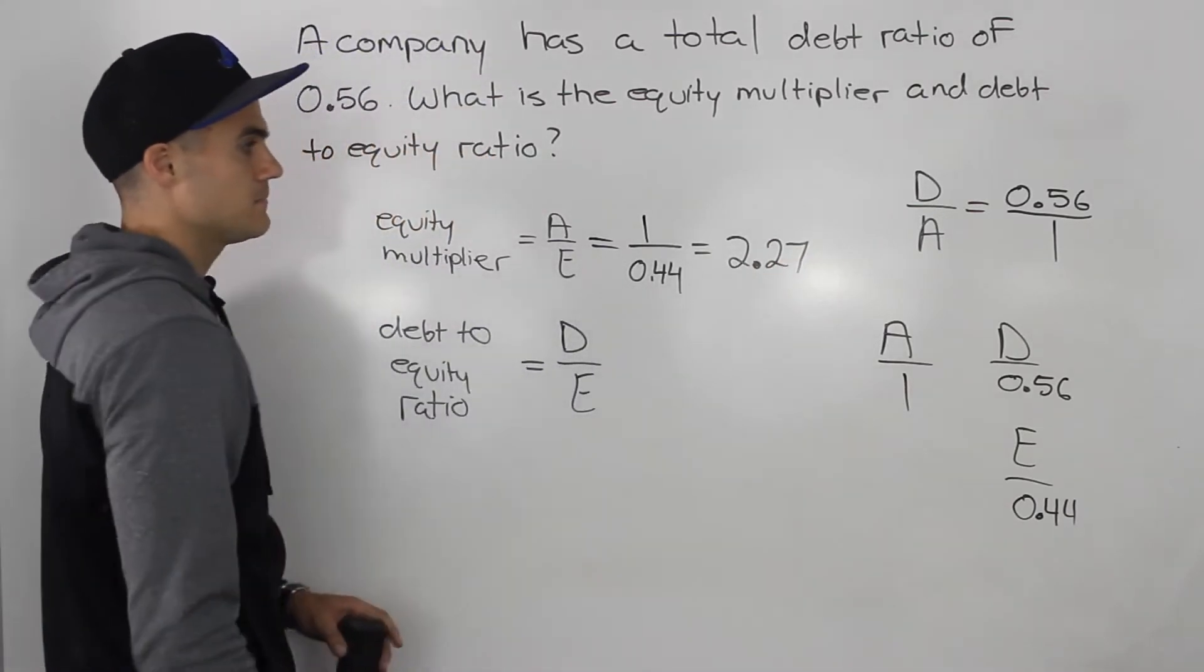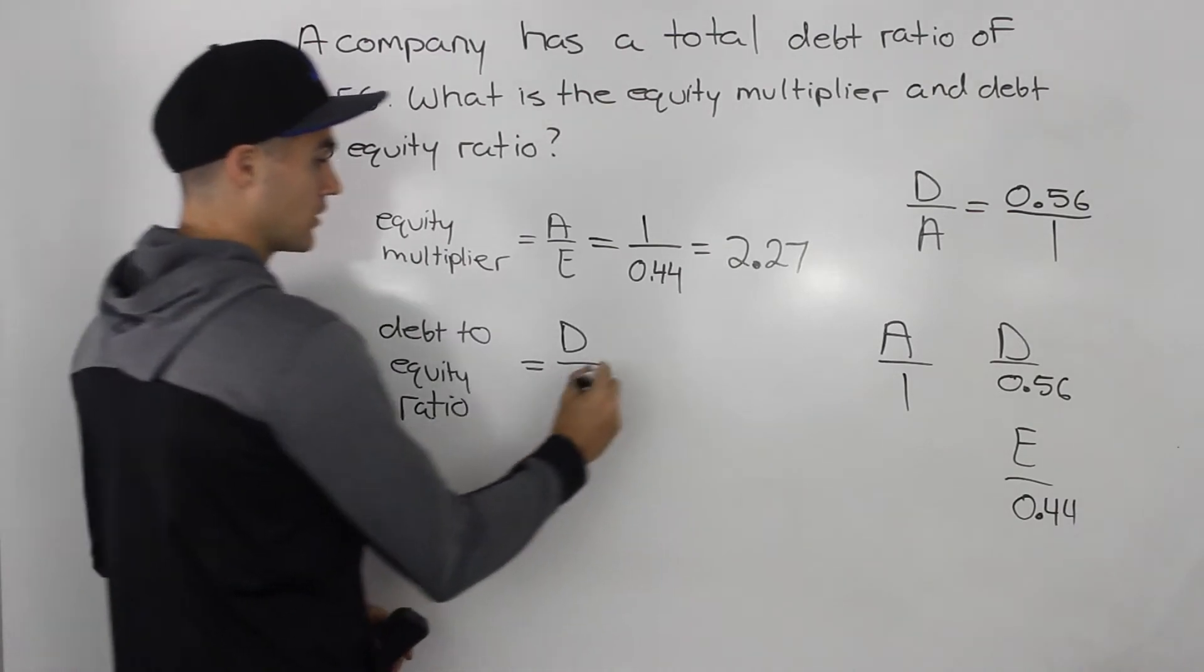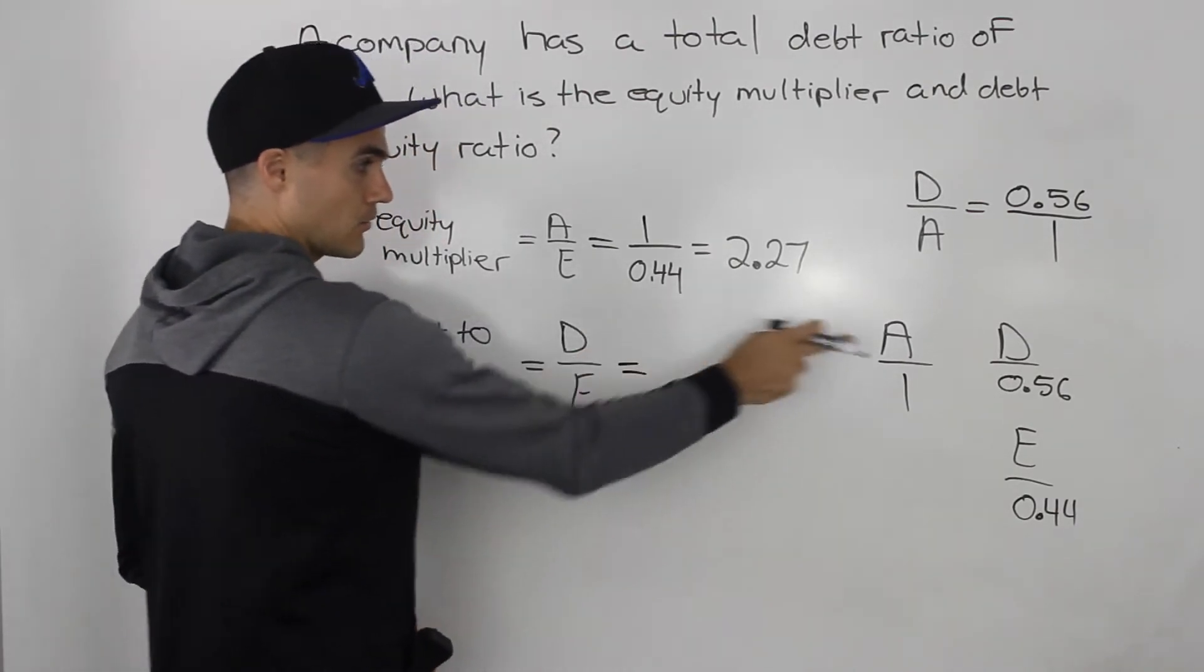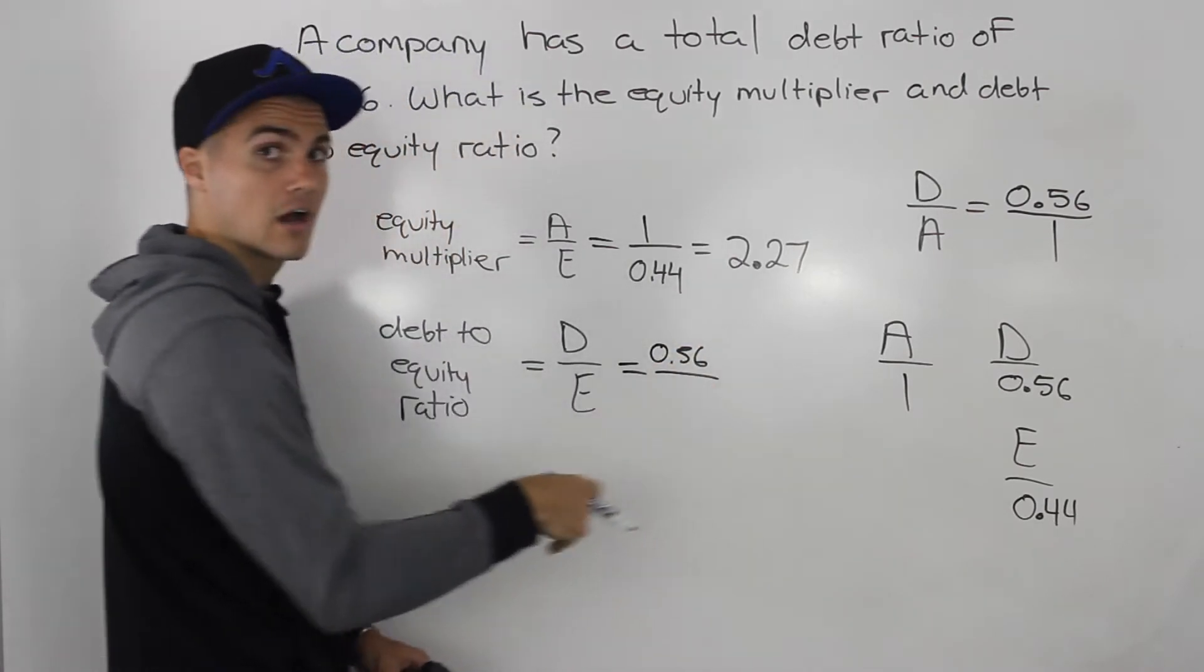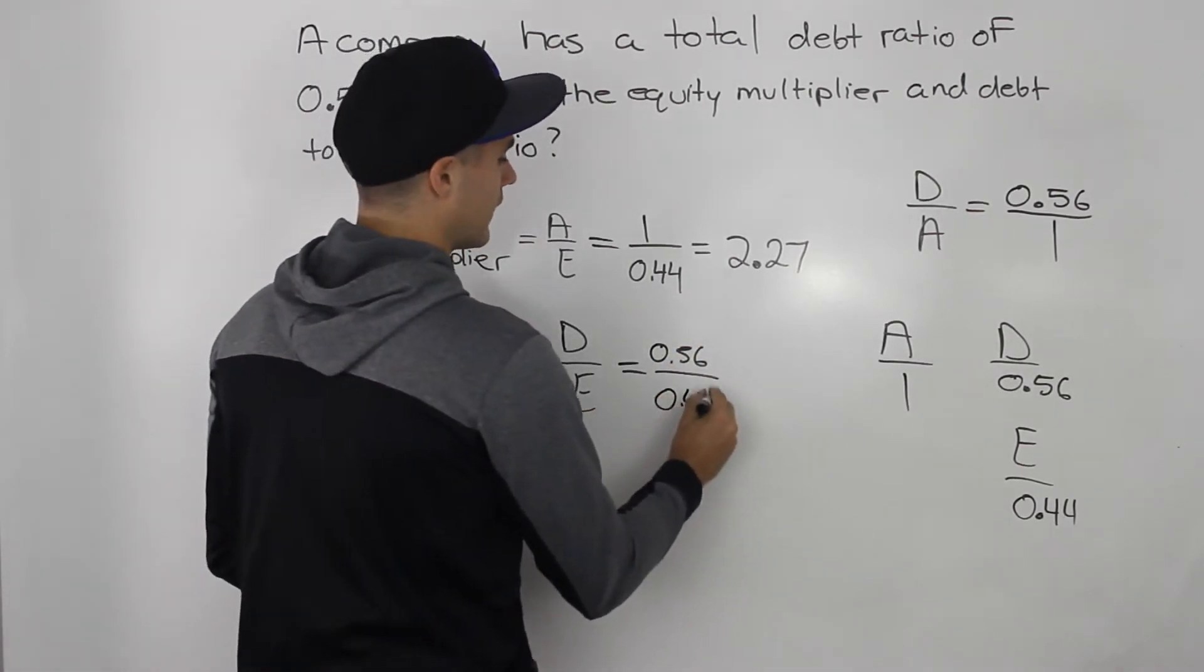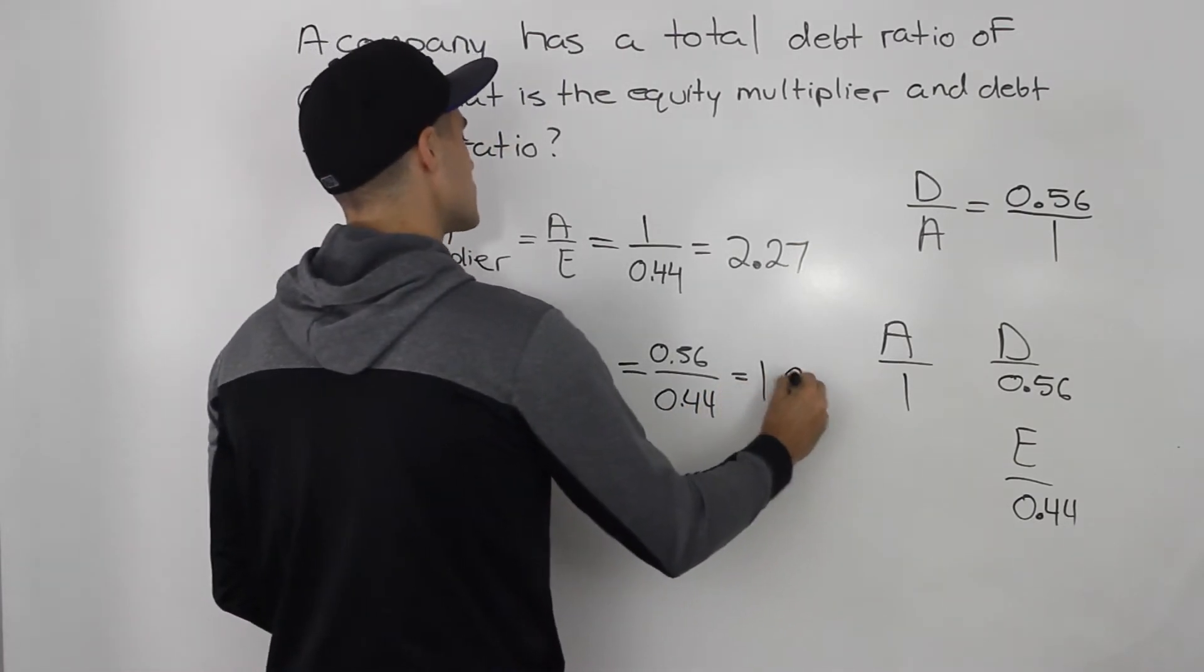So, the equity multiplier would be 2.27. And then the debt-to-equity ratio would be the debt amount, which is 0.56, over the equity of 0.44. And when you input that in your calculator, it would round off to 1.27.